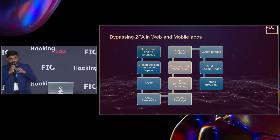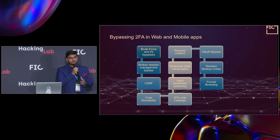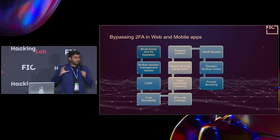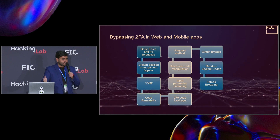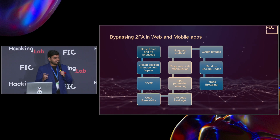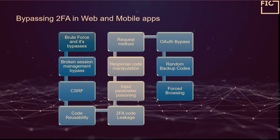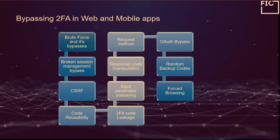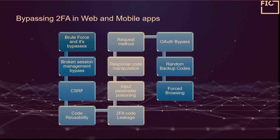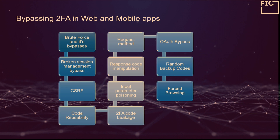Over the course of my career I have been able to identify multiple methods to bypass 2FA and MFA, and they all can be boiled down into these 10 different methods: brute force, broken session management, CSRF, code reusability, request methods, response code manipulation, input parameter manipulation, 2FA code leakage, OAuth bypasses, random backup codes, and forced browsing.